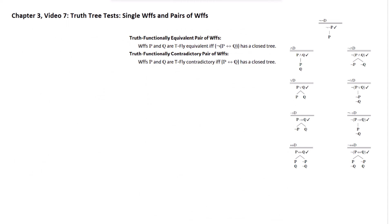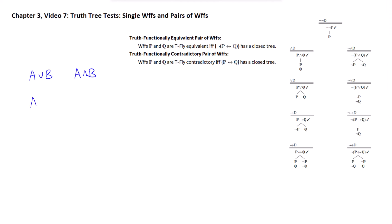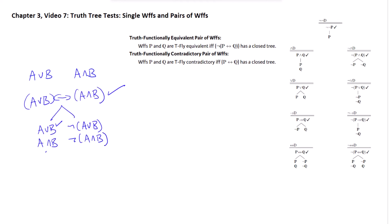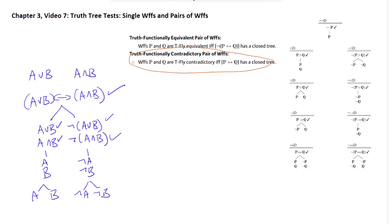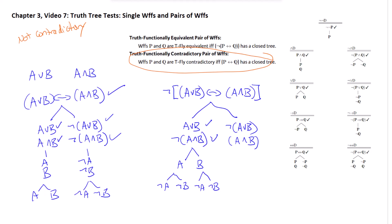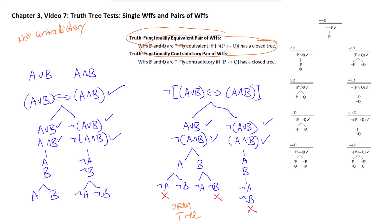One last example where we get neither equivalent nor contradictory — take a really simple case. If we test their biconditional, that remains open, so it is not contradictory. But in theory, that pair could still be equivalent, so we need to test their negated biconditional. That branches to two stacks. Looking at those branches, we see that some of them close: one has not-A and A, one has not-B and B, and one has both not-A, A and not-B, B. So those all close, but we have two open branches — we have an open tree on the negated biconditional. So the pair is not equivalent, and therefore it is neither contradictory nor equivalent.